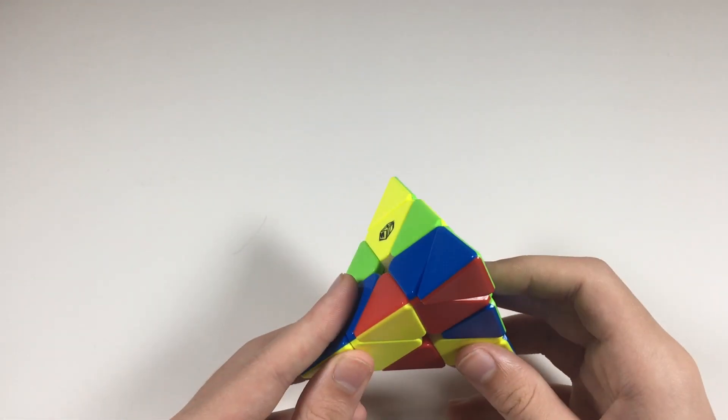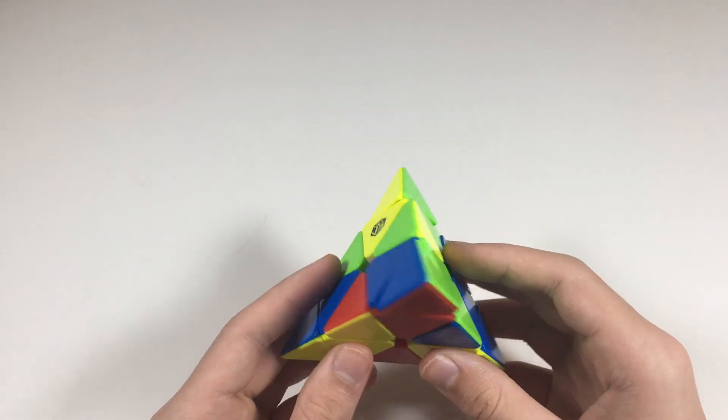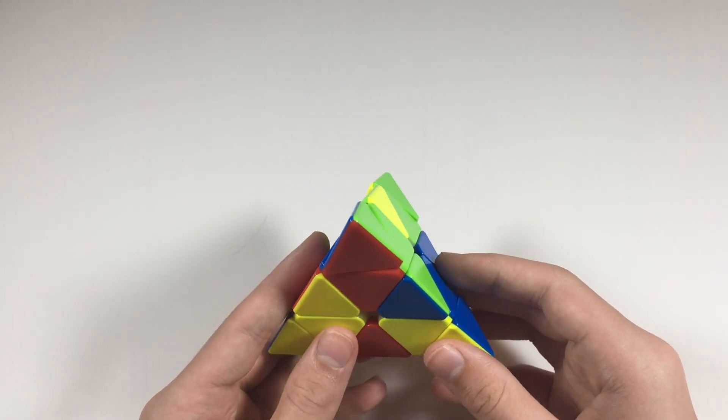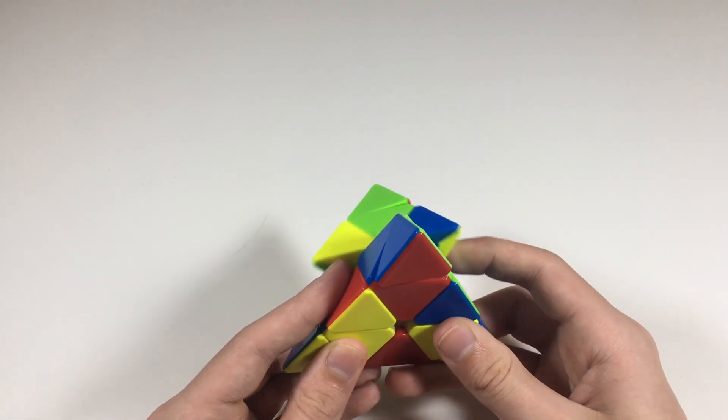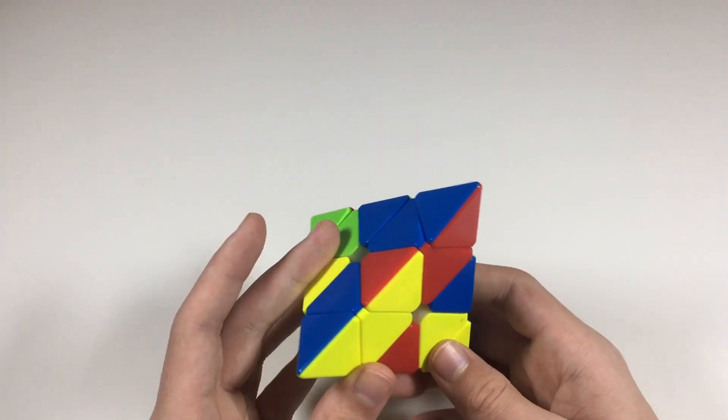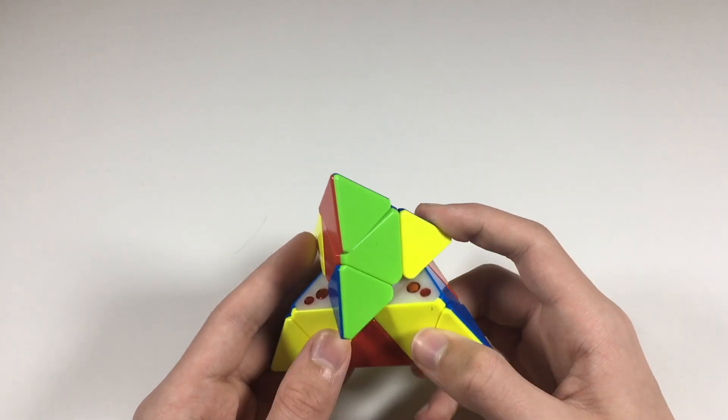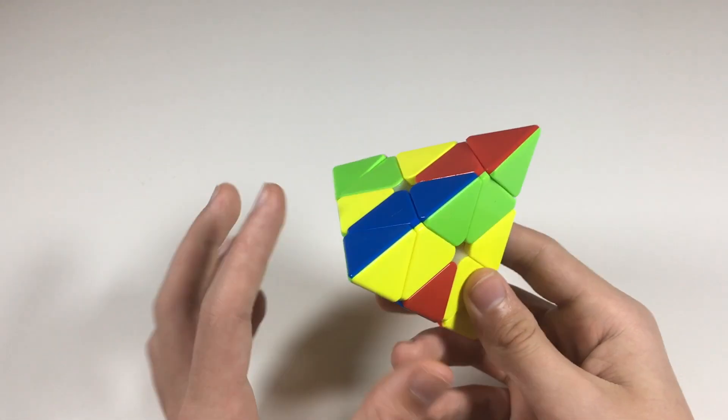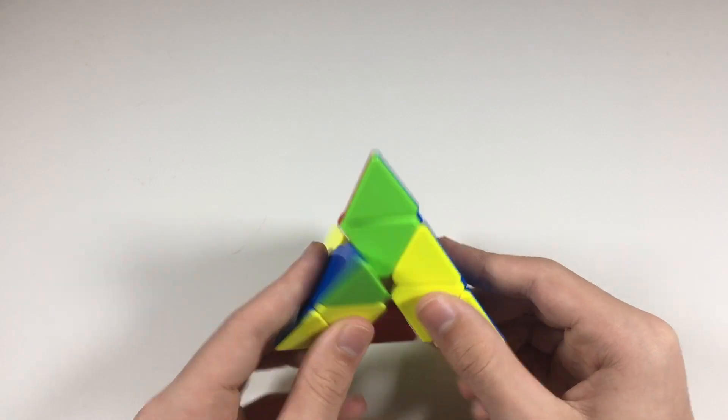So now this one for yellow is a little bit more complex because none of the centers are solved. But from here, I can tell that we could just solve that center in the back like this, and then we have this edge up here. So what we could do with this edge is a U to bring it and pair it up with its center, and then we can just insert both of these centers just like that.